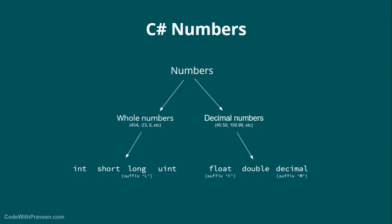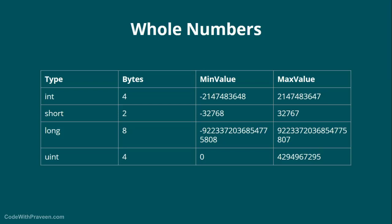Let's dig deeper into whole numbers in more detail. We have int, short, long, and unsigned int. The main difference is the number of bytes each type takes. Integer takes 4 bytes, short takes 2 bytes, and long takes 8 bytes. Each type has a minimum and maximum value it can store. Integer can store up to a certain maximum; beyond that it will overflow and come back to a negative number. As storage bytes decrease, the min and max values also decrease accordingly.